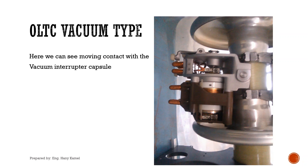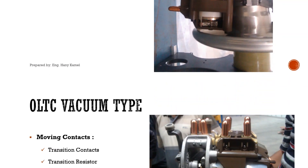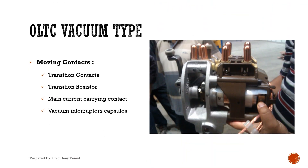Moving contacts of the vacuum type include: transition contacts — unlike the oil tap changer type which has two transition contacts, the vacuum type has one; transition resistor, same as before; main current carrying contacts, same as before; and vacuum interrupter capsules, which interrupt the arc during tap changing.